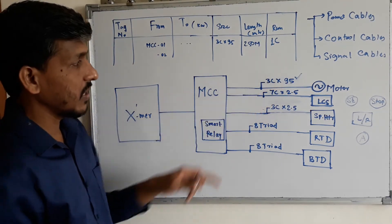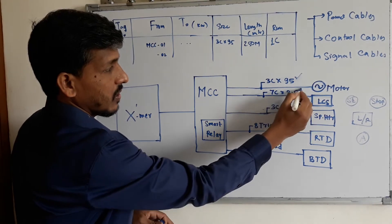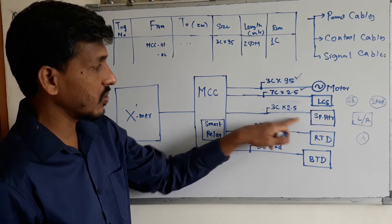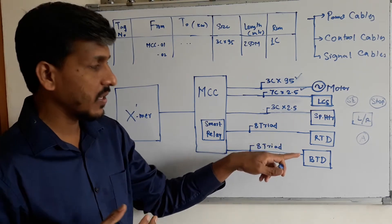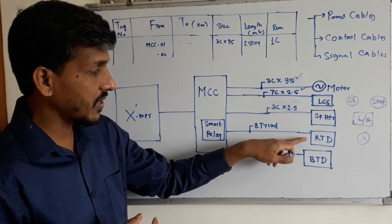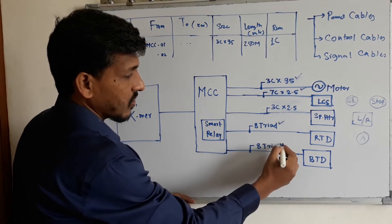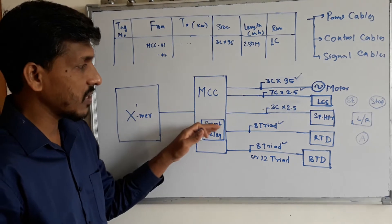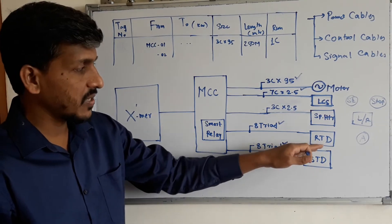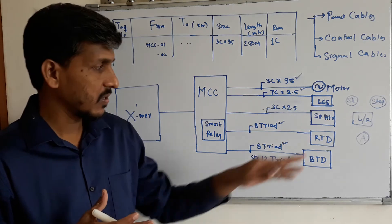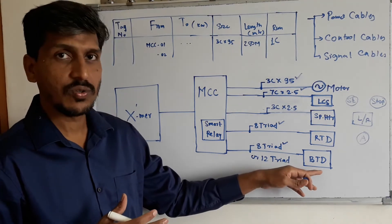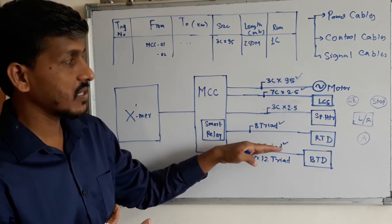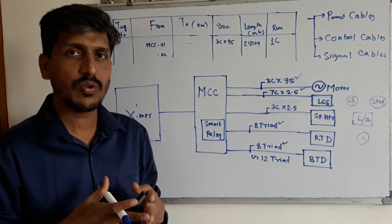For a motor, the power cable could be a 3-core 95mm² cable. Then there is the LCS control cable, which is a 7-core 2.5mm² cable. Third is the space heater cable, which is a 3-core 2.5mm². Depending on the motor rating, there are also RTDs and BTDs in the motors, requiring signal cables such as 8-triad or 12-triad cables. These connect from your marshalling rails to the RTDs and BTDs. RTDs measure the temperature of the windings, while BTDs measure the bearing temperatures of the motors.